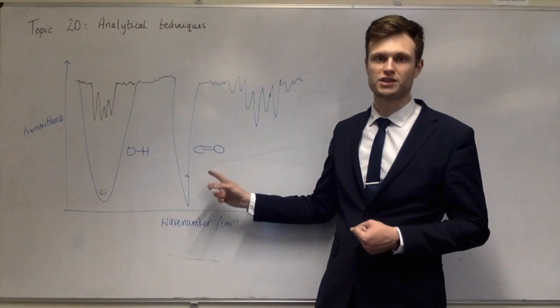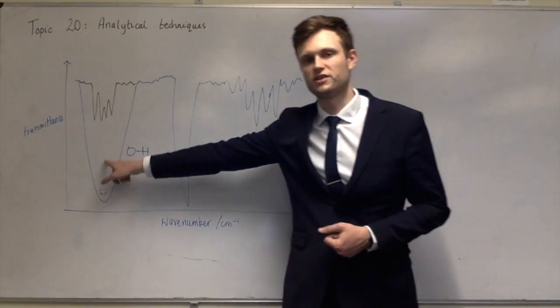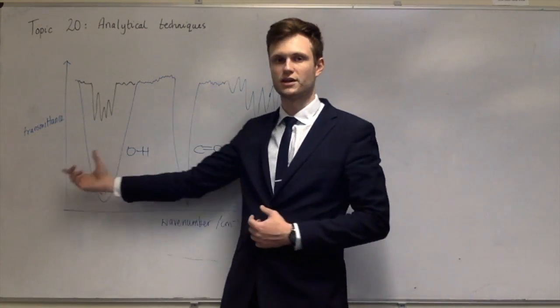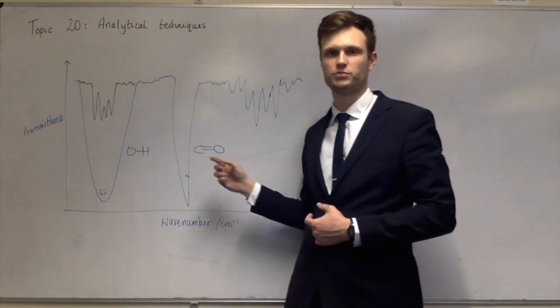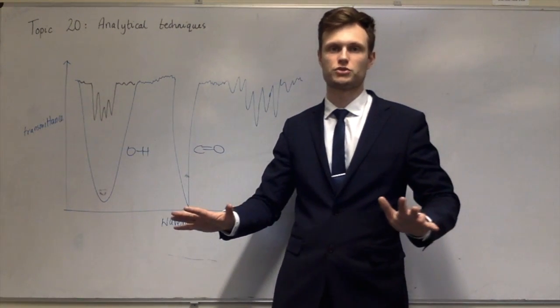Secondary alcohols go to ketones, so you get this peak, but not this one. And primary alcohols get oxidized all the way to carboxylic acids, so we have both of these peaks. And that's it for infrared spectrometry.